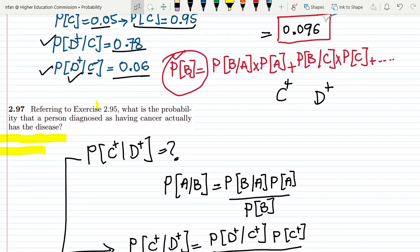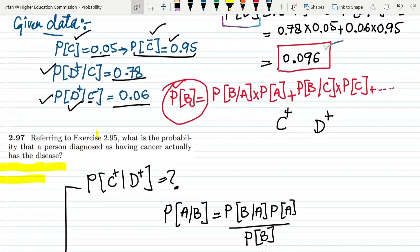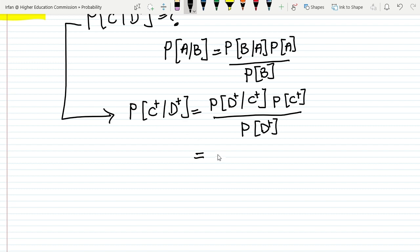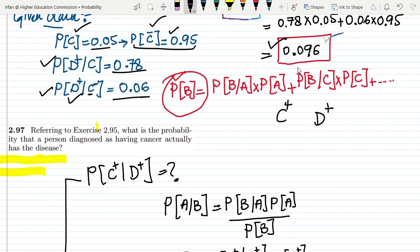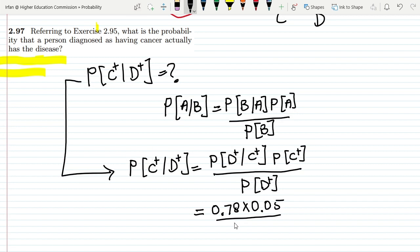Now let me put it here. It would be what? Probability of D plus given C plus how much is this? Let me see. This is 0.78. That is 0.78, probability of C is 0.05 and dividing it over probability of D plus, what is this? This is what we have found out and that is 0.096.